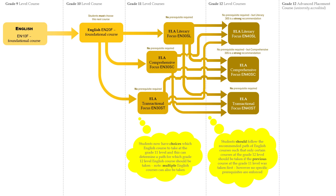Note that multiple English courses can also be taken. Students should follow the recommended path of English courses such that only certain courses at the Grade 12 level should be taken if the previous course at the Grade 11 level was taken first. However, no specific prerequisites are enforced. The Advanced Placement English course is also an option for students in Grade 12.